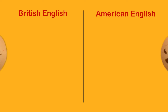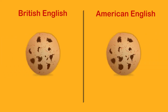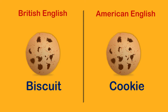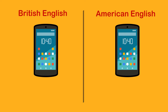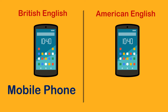For example, in British English this is referred to as a biscuit, but in American English this is referred to as a cookie. Britain says mobile phone, but Americans say cell phone.